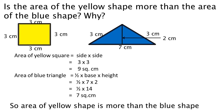Here is a question for you. Is the area of the yellow shape more than the area of the blue shape? If yes, why? There are two shapes on the screen — first one is a square (yellow shape) and the other one is a triangle (blue shape). Area of yellow square is equal to side into side. Side is three centimeter, so three into three is equal to nine square centimeter. Area of yellow square is nine square centimeter.